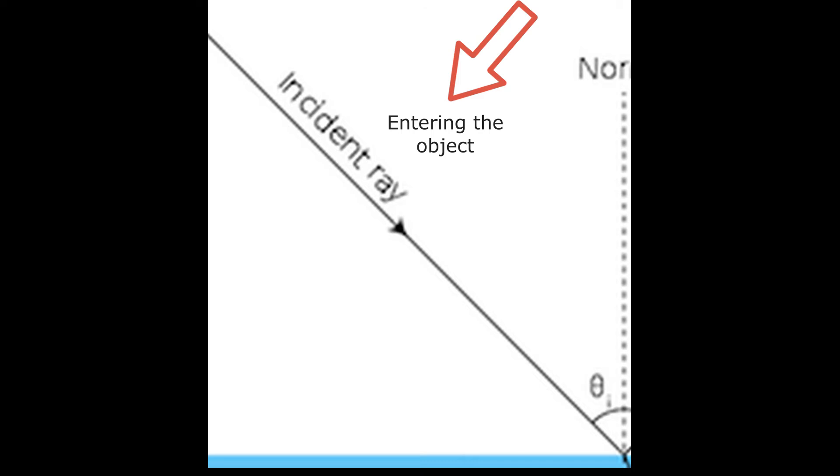Incident ray is the ray of light which enters the medium or the one which is going to get reflected. As you can see in this picture, this is the incident ray as it is the one which is going to enter the medium and is going to get further reflected.